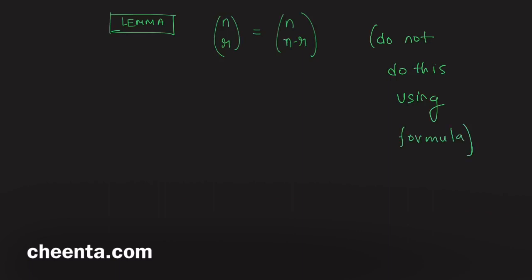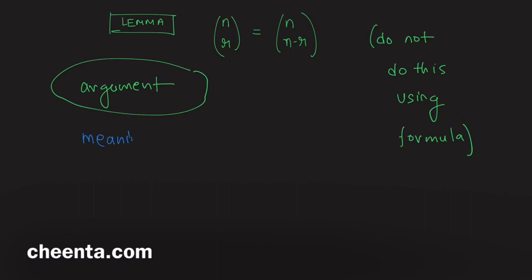You'll get the first taste of combinatorial argument as we solve this. So we want to show that the left-hand side and the right-hand side are equal. The meaning of the left-hand side is: choosing r things from n distinct things.